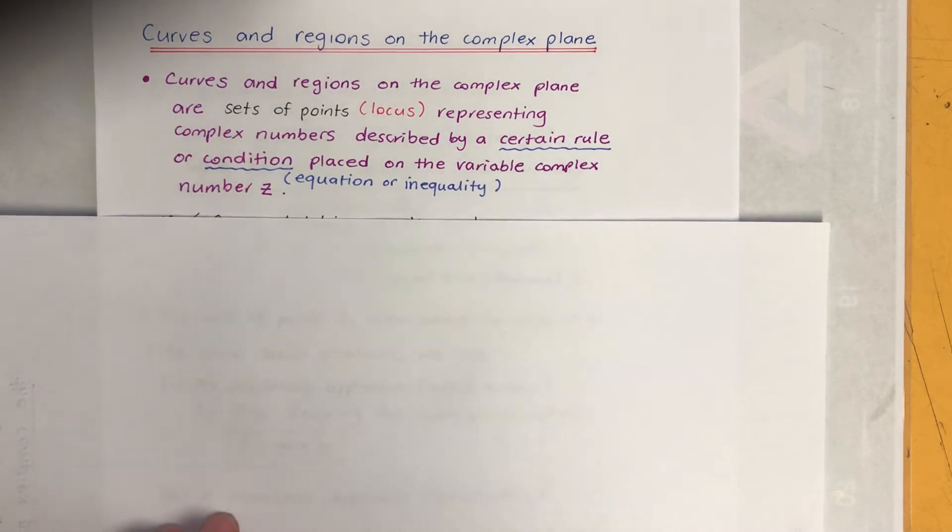Okay, curves and regions on the complex plane. Curves and regions on the complex plane are sets of points representing complex numbers described by certain rules or conditions placed on a variable complex number Z.